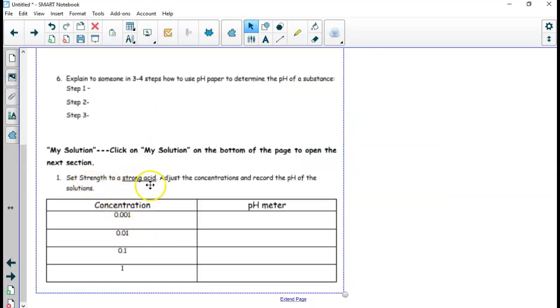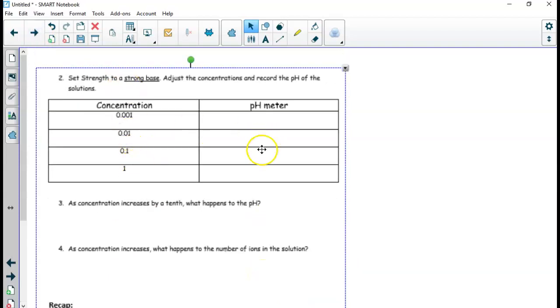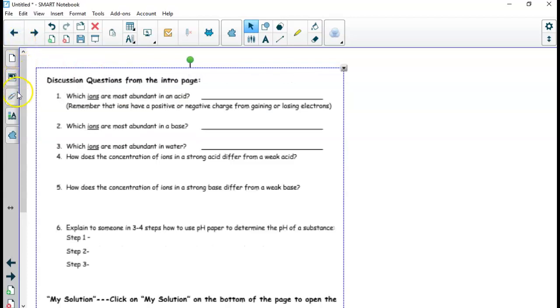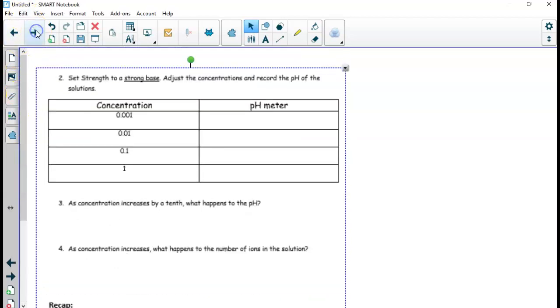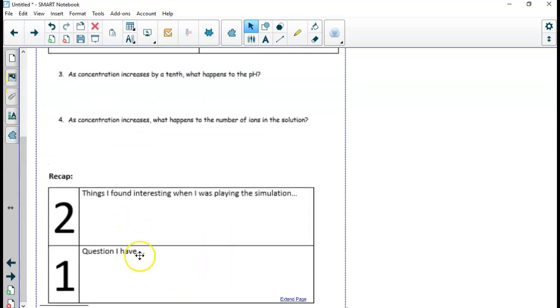So you're going to set it first to strong acid. Fill in these concentrations and write down what the pH meter says. And then you'll do a similar thing for a strong base. And then try to see what's the pattern. So as your concentration increases by a tenth, so this would be a tenth right here, what happens to the pH? Does it go up by one number or 100 numbers or two numbers or 10 numbers? What pattern do you see as things increase and decrease? And as you increase the concentration, does the number of ions go up or go down? So those are the questions you're looking at as you explore these acids and the bases. And then you've got two recap questions here, two things that you thought were interesting that maybe you didn't know before, and if you have a question that you saw that you still don't understand.